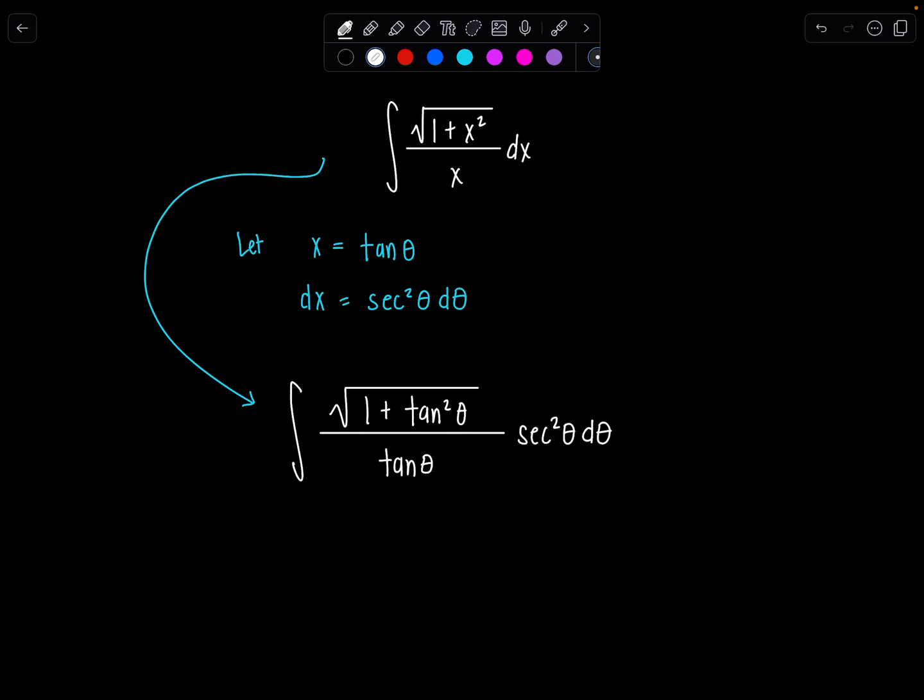Now the whole point of doing trig sub is so that you can use your Pythagorean identities and help you simplify the integrand. So one plus tan squared theta, that's equal to secant squared theta. So in the numerator right now, I have square root of secant squared theta. No, that doesn't just give us secant theta. Remember, that gives us the absolute value of secant theta.